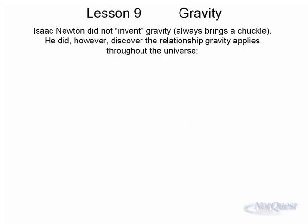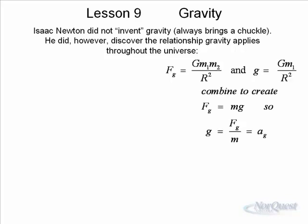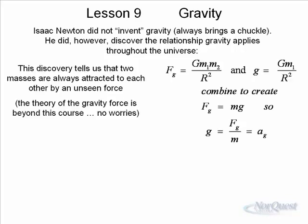Isaac Newton didn't invent gravity, but he did discover the relationship gravity applies throughout the universe. He said that two masses are attracted to each other by an unseen force called gravity. The theory of gravity involves something called a graviton, which hasn't been discovered yet. They're still looking for it, so to really look at the theory of gravity, we need something beyond this course, but not a problem.